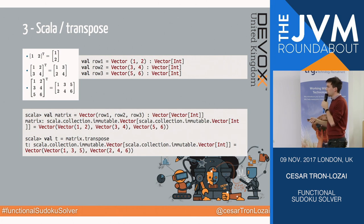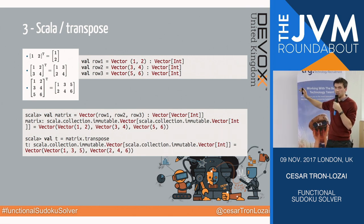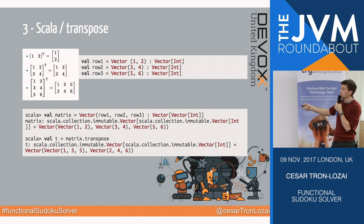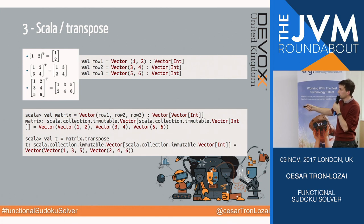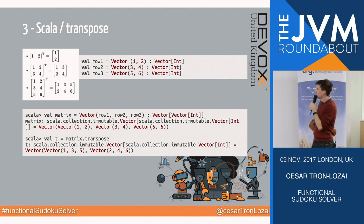The transpose operator: as I said, if you have a matrix you can see it as a vector of rows or a vector of columns, and transpose does the transition between the two. You may have seen this in math — a matrix of shape 2×1 becomes shape 1×2. If you have a square matrix, it just flips everything around the diagonal. So if I have a matrix with three rows — 1, 2, 3, 4, 5, 6 — if I transpose it, I get two columns: 1, 3, 5 and 2, 4, 6.